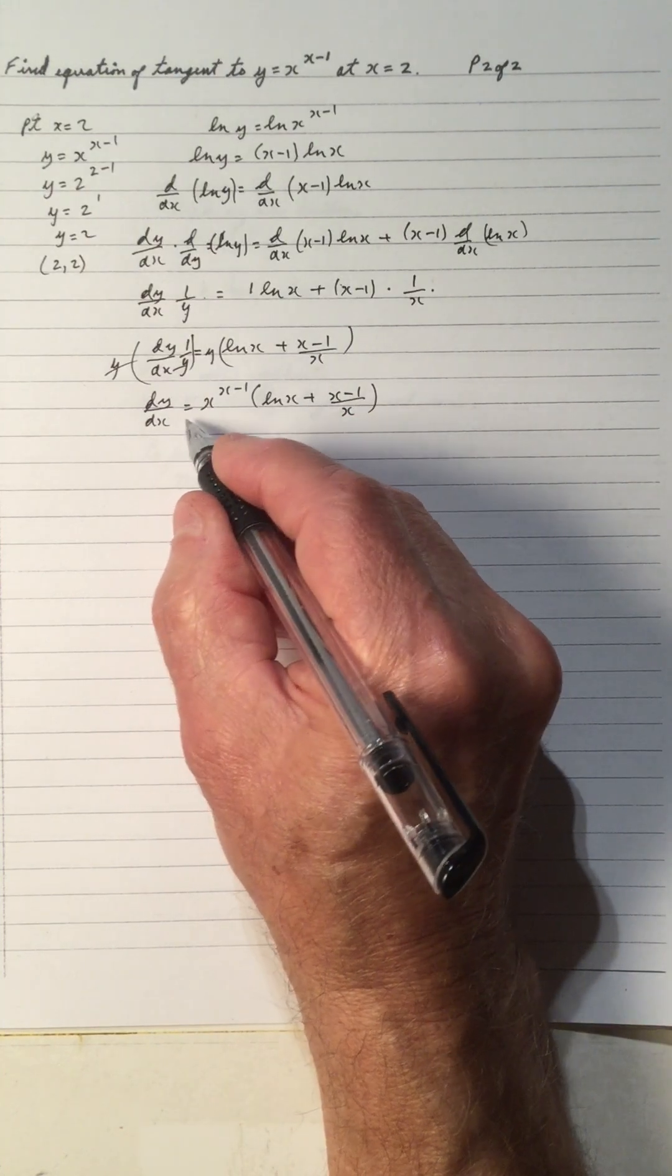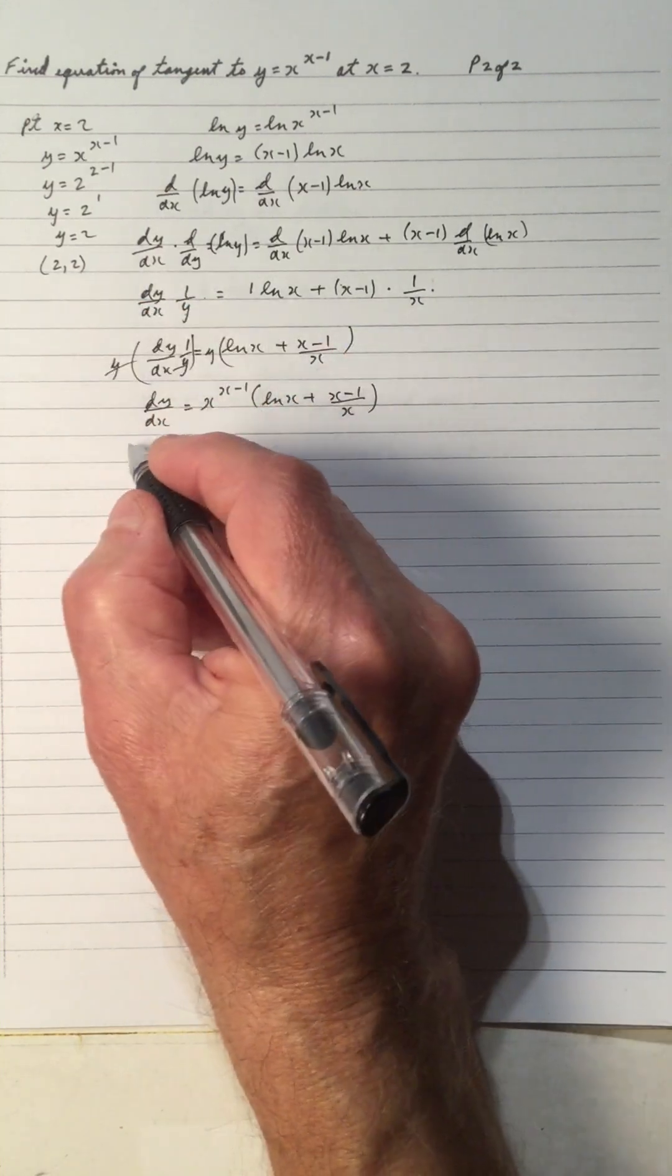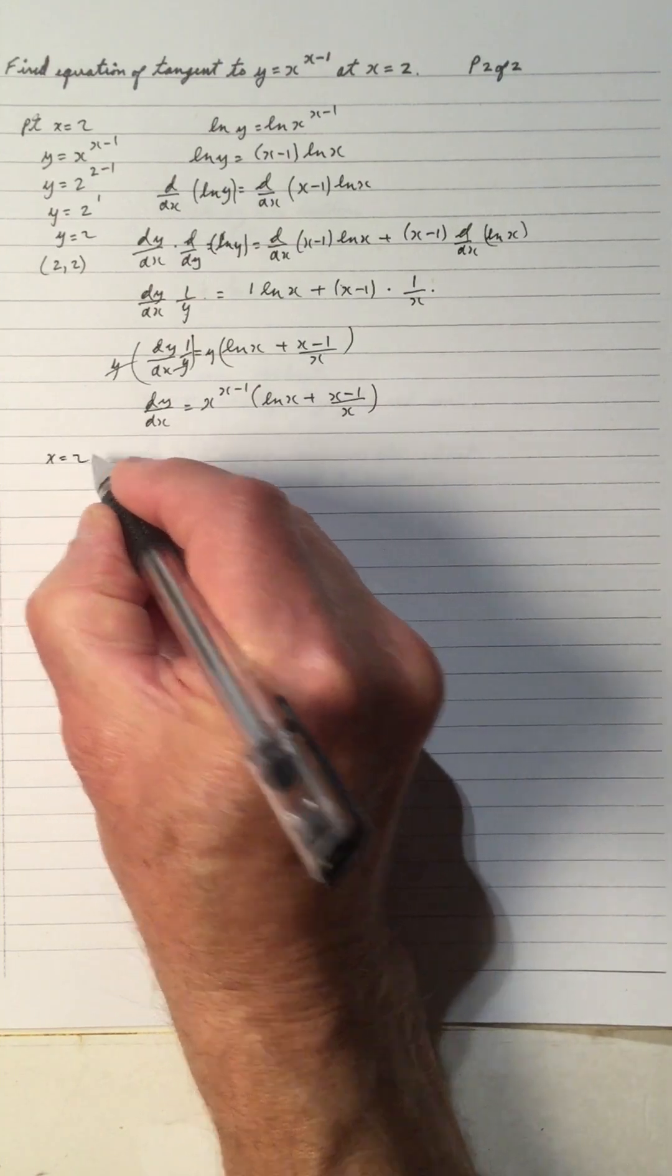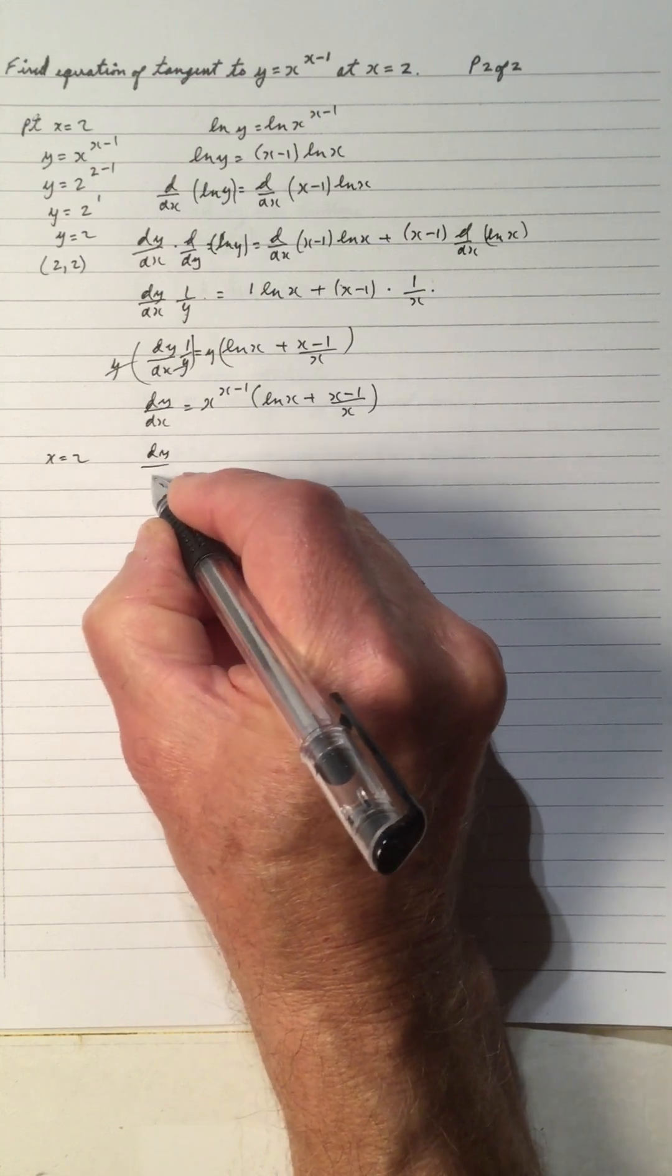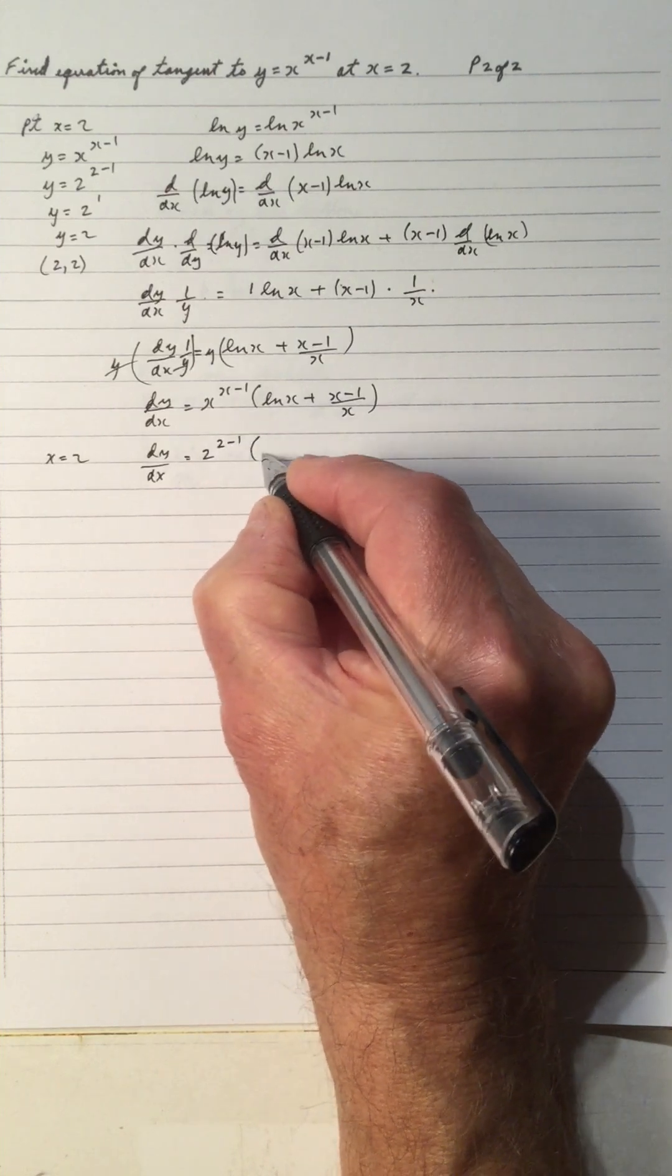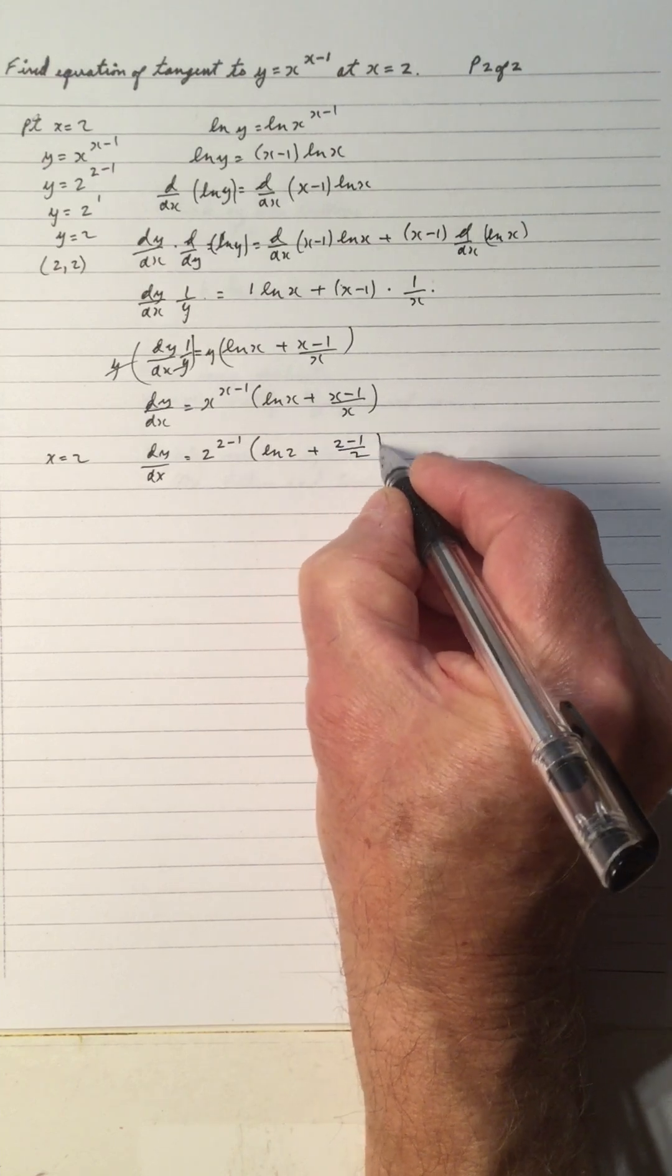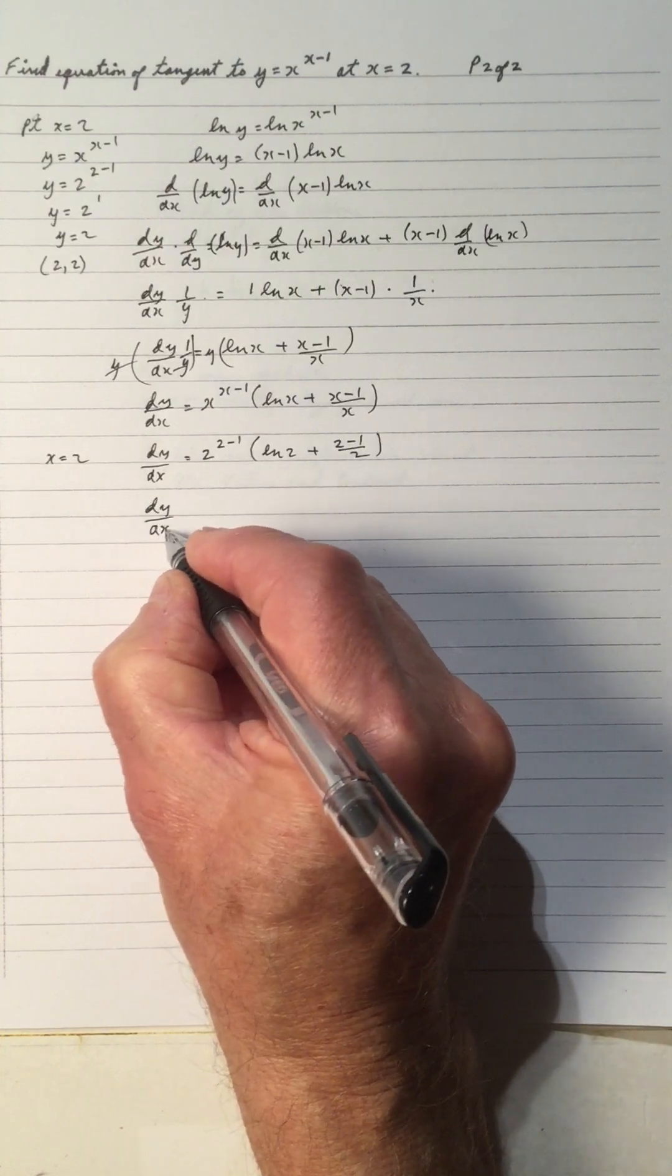dy dx is the slope of the curve, slope of the tangent at that point of 2, 2. So we're going to find the value of the slope. So x equals 2, so we'll plug 2 into dy dx. We'll plug a 2 in place of x and we'll simplify that to get the value of the slope.